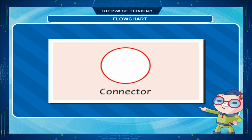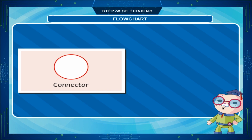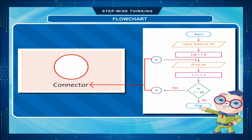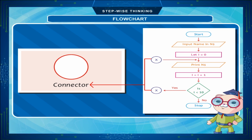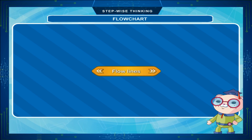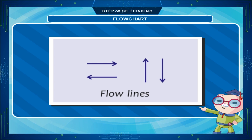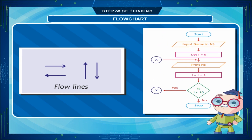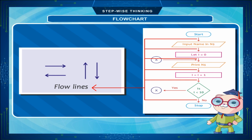Connector: The connector is circular in shape and is used to connect two statements situated at different places in a program. It is very useful to show the connection of different parts of a flowchart made on different pages. Flow lines: Flow lines in a flowchart are the arrows which connect two boxes and determine the flow or sequence of instructions. These flow lines generally flow from top to bottom and from left to right.